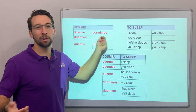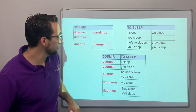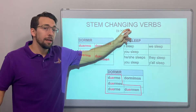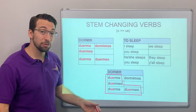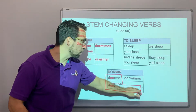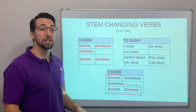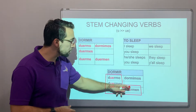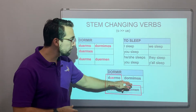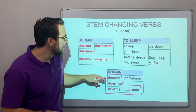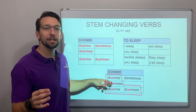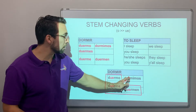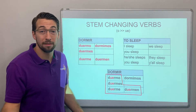We don't really worry about the vosotros form. So O-to-UE stem-changing verbs — they're called boot verbs, because only the conjugations inside of the boot, here's our little shoe — give them some laces and the tongue — only the conjugations inside of the boot receive the stem change. So the nosotros form always keeps the regular stem.